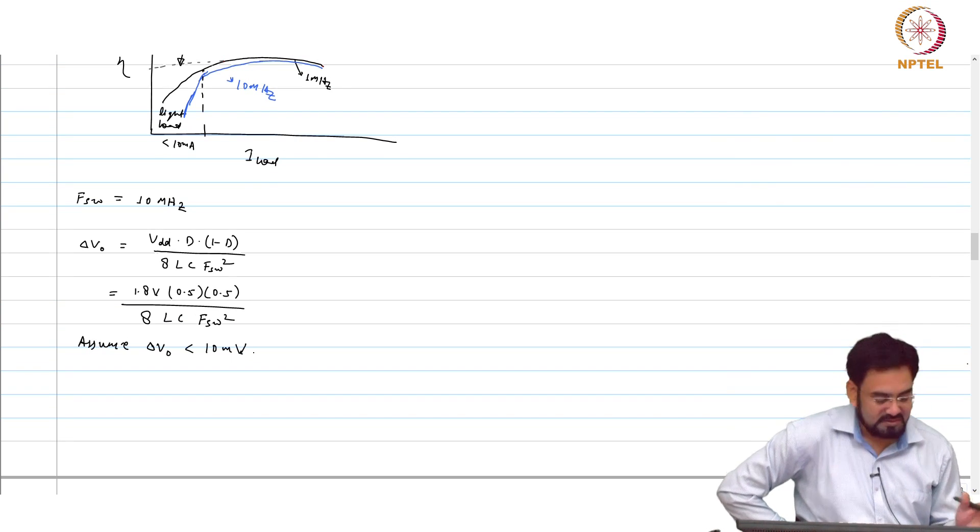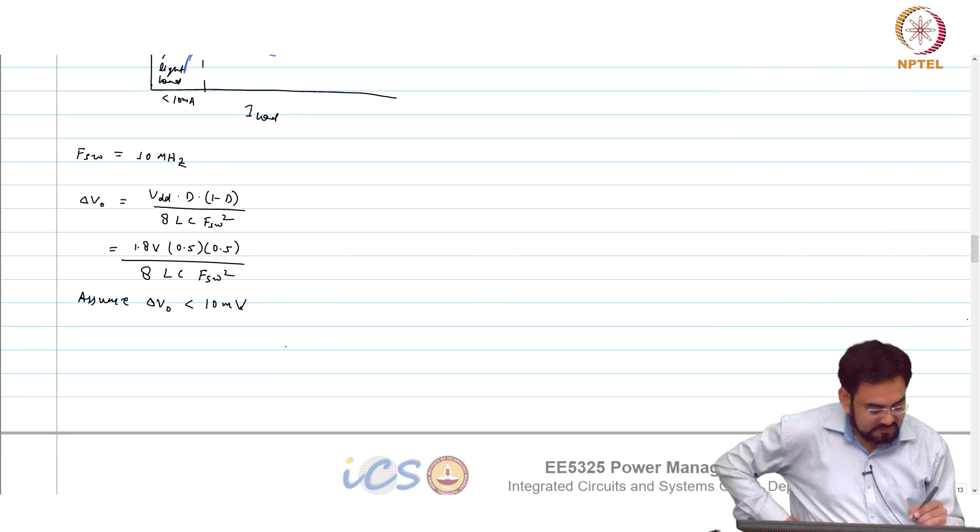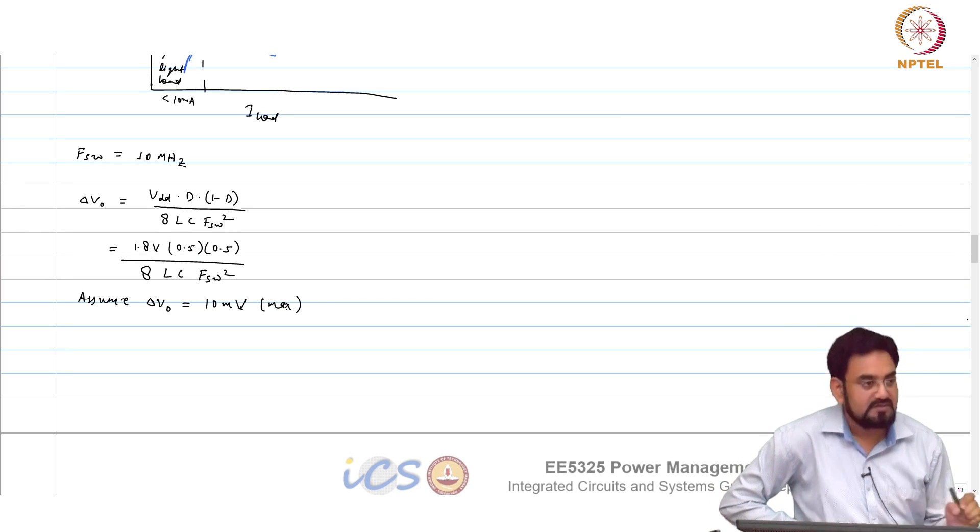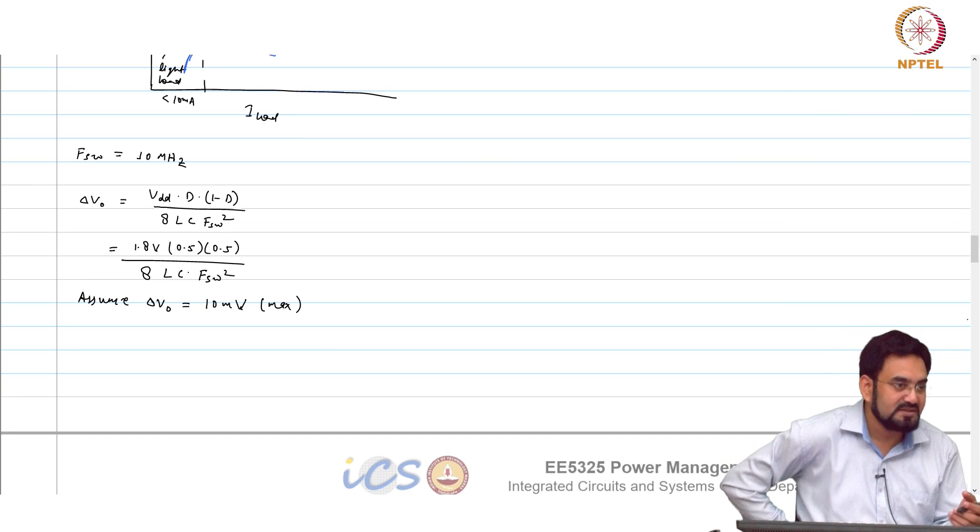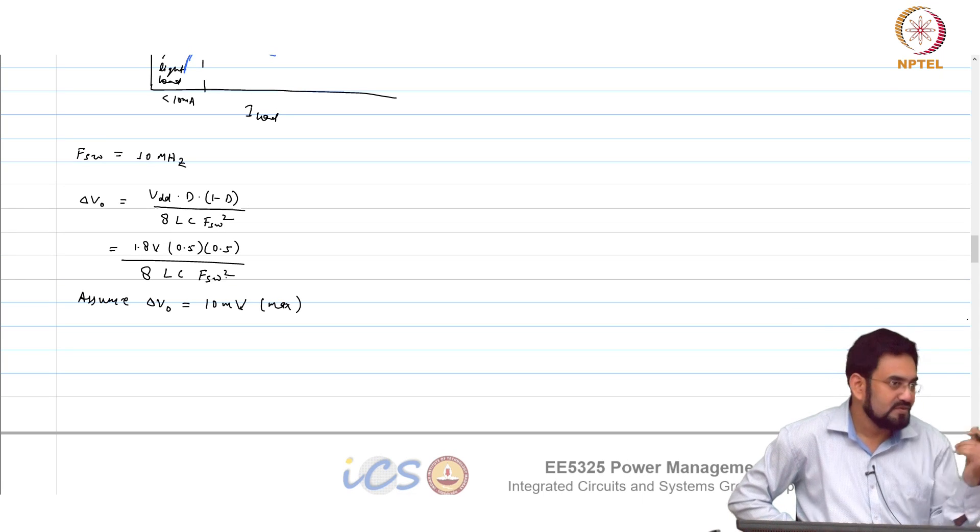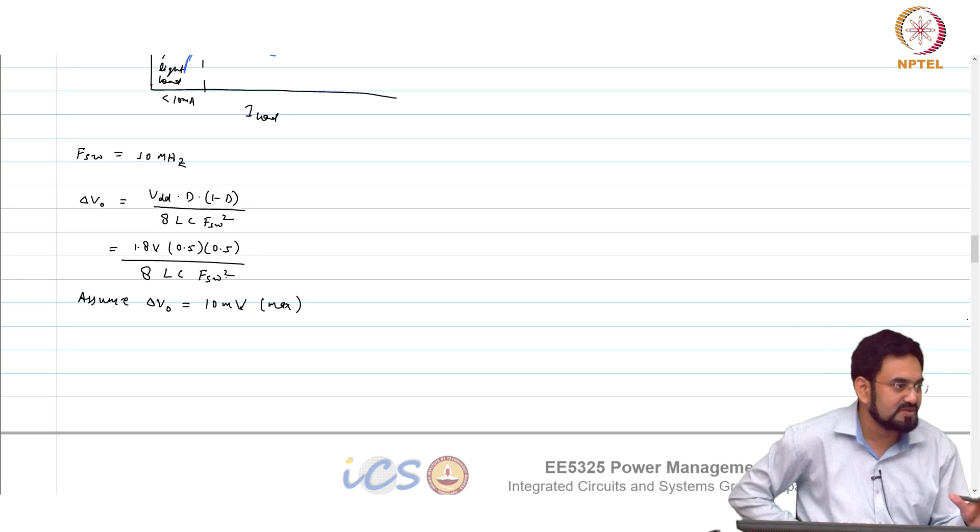10 millivolt is the worst case. 10 millivolt is the max number. The worst case you have to, which means whatever the variations in L and C considering that everything, it should not be more than 10 millivolt. When you design at a typical case you have to have some margin. Usually typical case you will target 5 millivolt because your L and C will have some tolerances. Those tolerances may be plus minus 20 percent. This LC product may see a huge variation. And then FSW also, how much variation you have in the switching frequency because you will be designing on chip oscillator. That oscillator may also vary across process voltage and temperature. Even if it is 10 percent, that 10 percent you also have to consider.